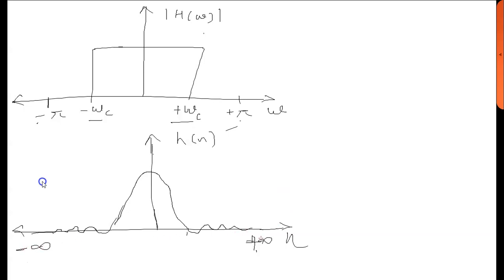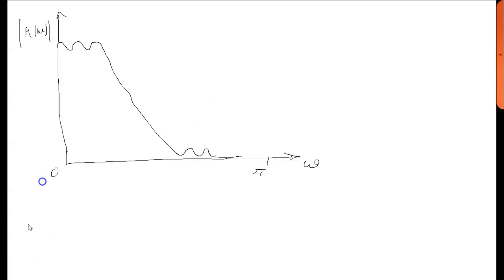It goes from minus infinity to plus infinity. But this infinite number of samples is very difficult for us to store. So what we do is that we truncate it — we take a finite number of samples in the time domain. When we truncate a sample in the time domain, it gets reflected in the frequency domain like this. Oscillations get introduced in the pass band and the stop band, and these oscillations are known as Gibbs phenomena.